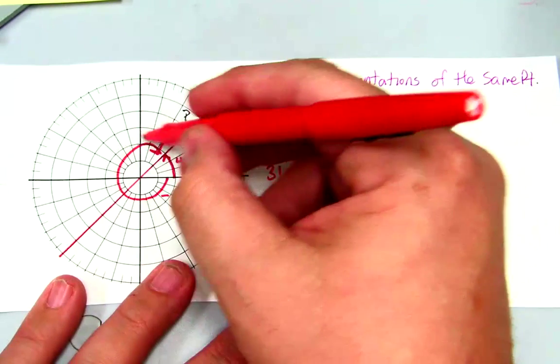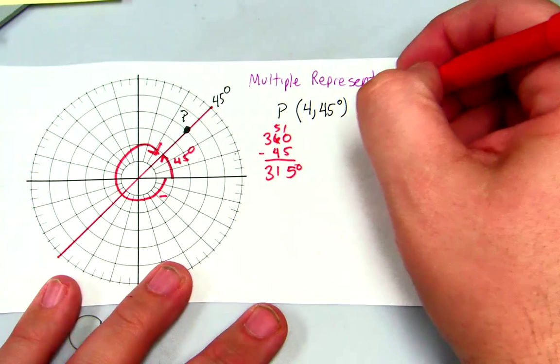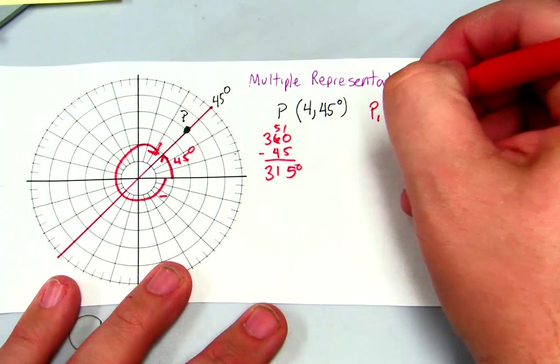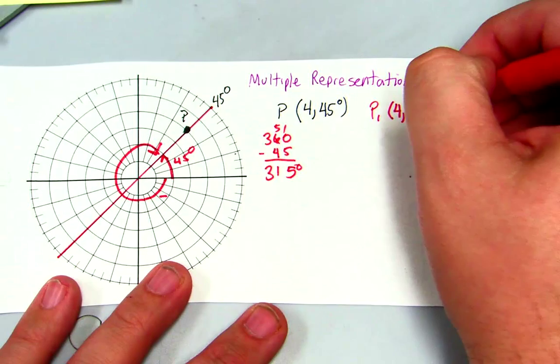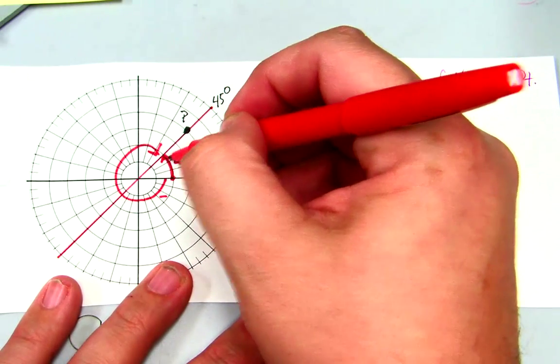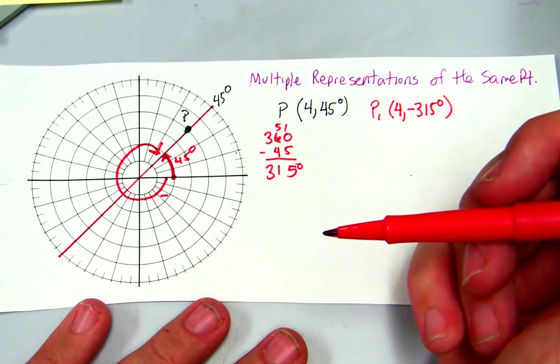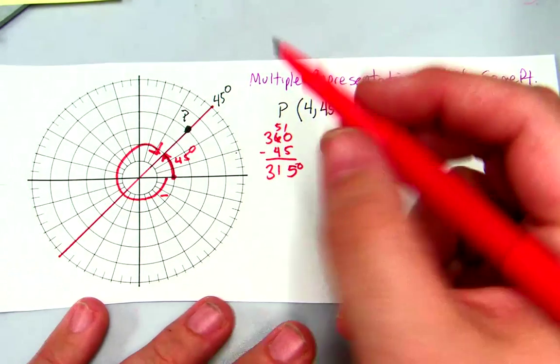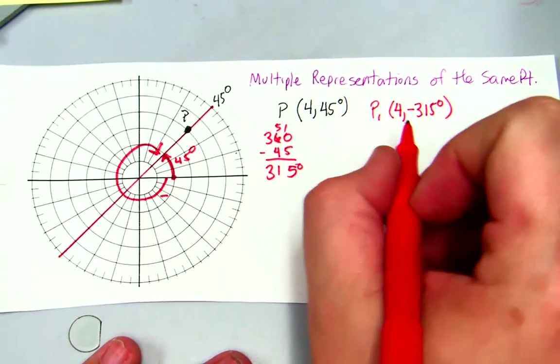And I know it's going to be negative 315 degrees, so I'll call P1 would be at 4, negative 315 degrees. If we started, instead of traveling in a positive direction for our angle, we traveled in a negative direction for our angle. So we got one representation.